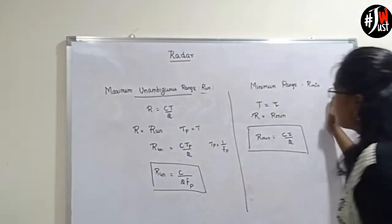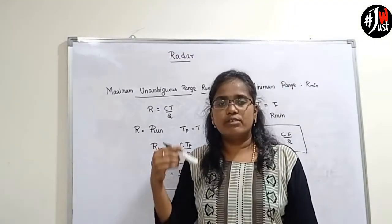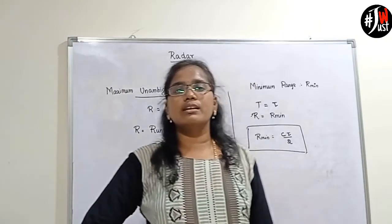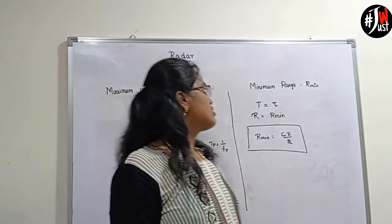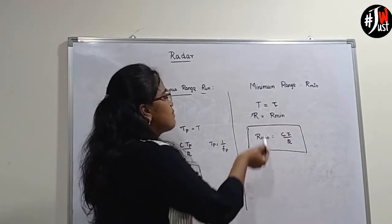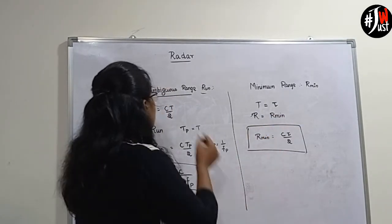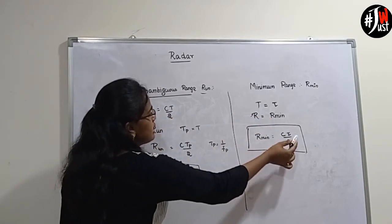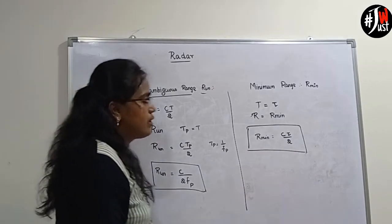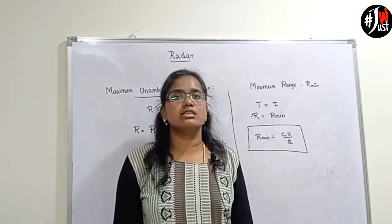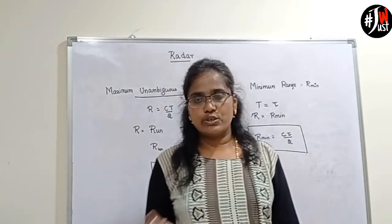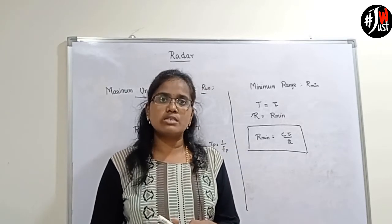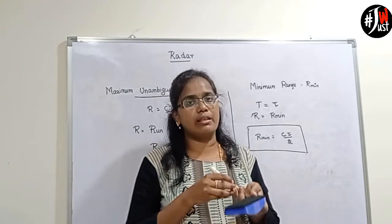Now let us explain minimum range. First we send an electromagnetic signal, and within a fraction of a time period the echo signal is received. That fraction of time period is also known as tau (τ). Substituting into the range equation, R_minimum equals C·τ divided by 2. So the four terminologies of radar are: range, pulse repetition frequency, maximum unambiguous range, and minimum range.